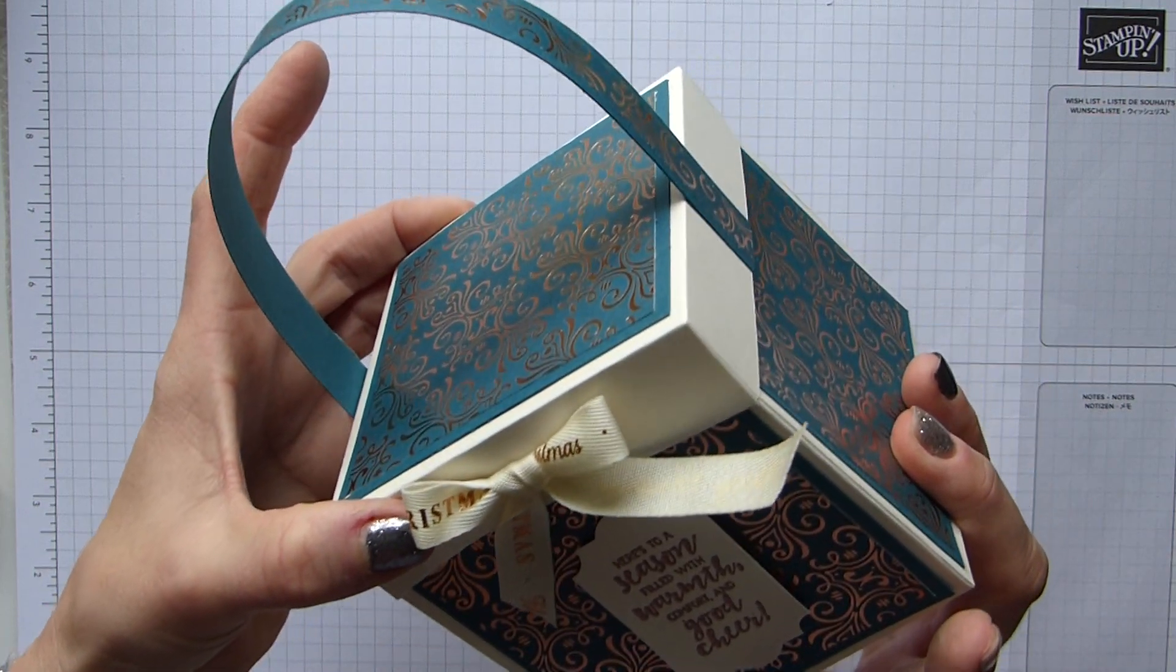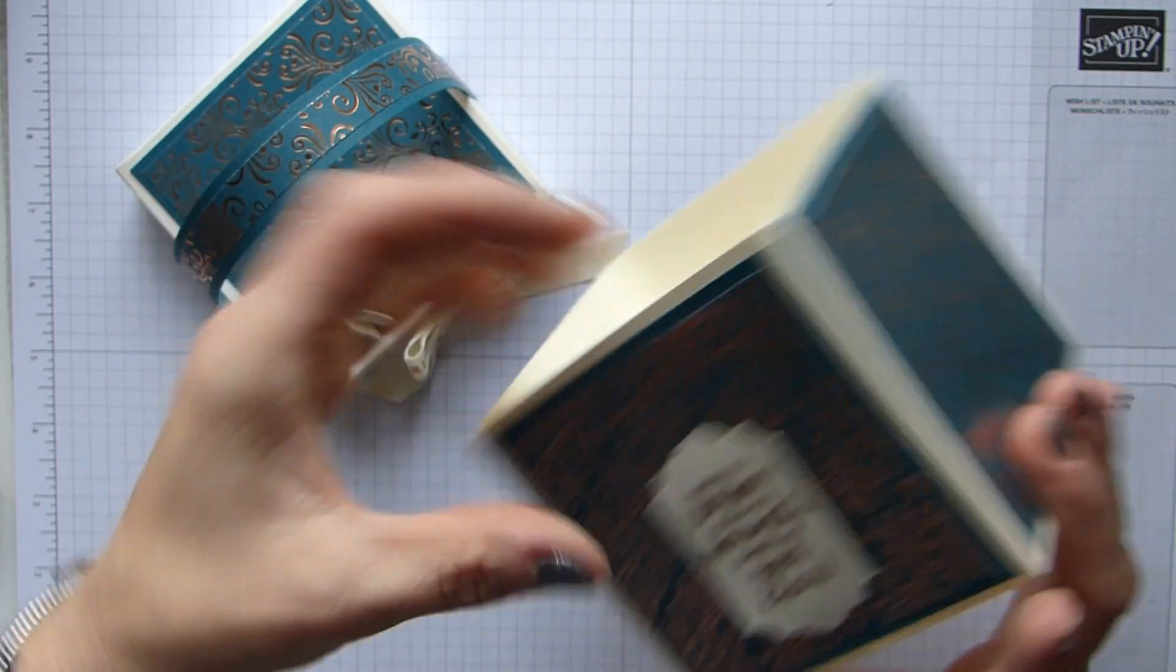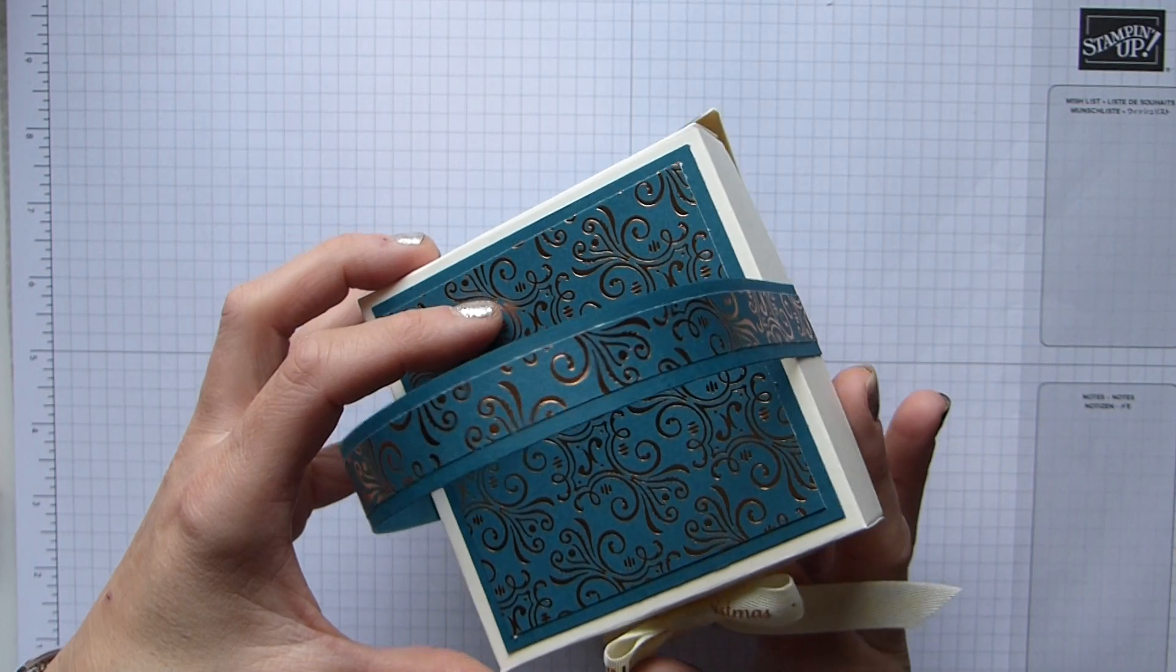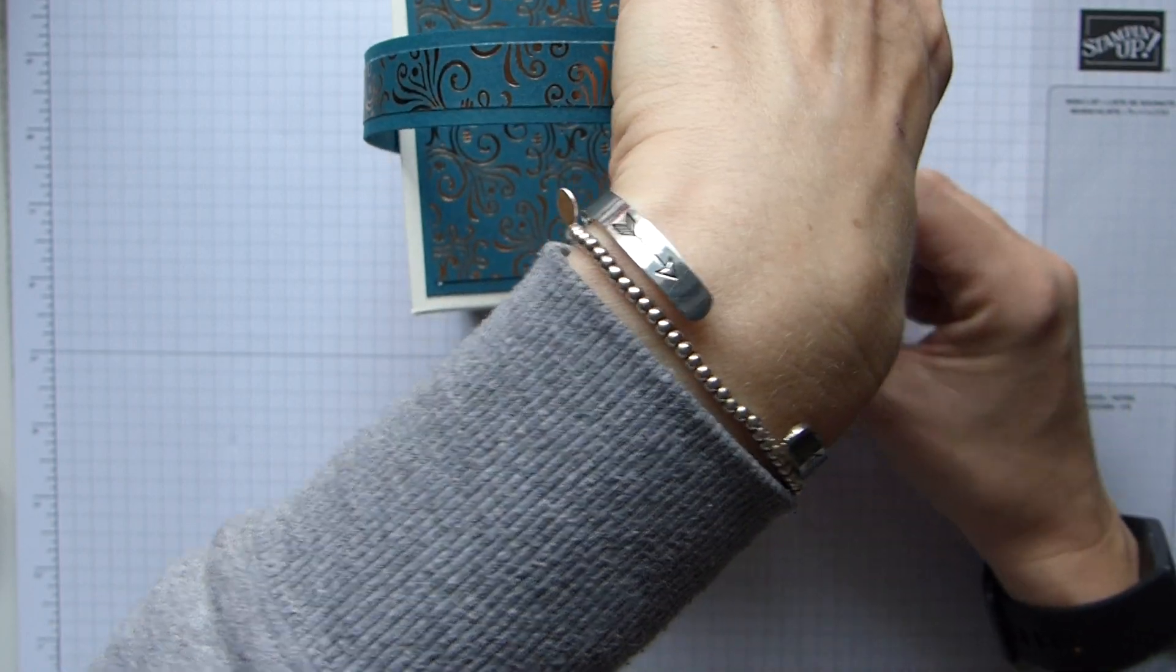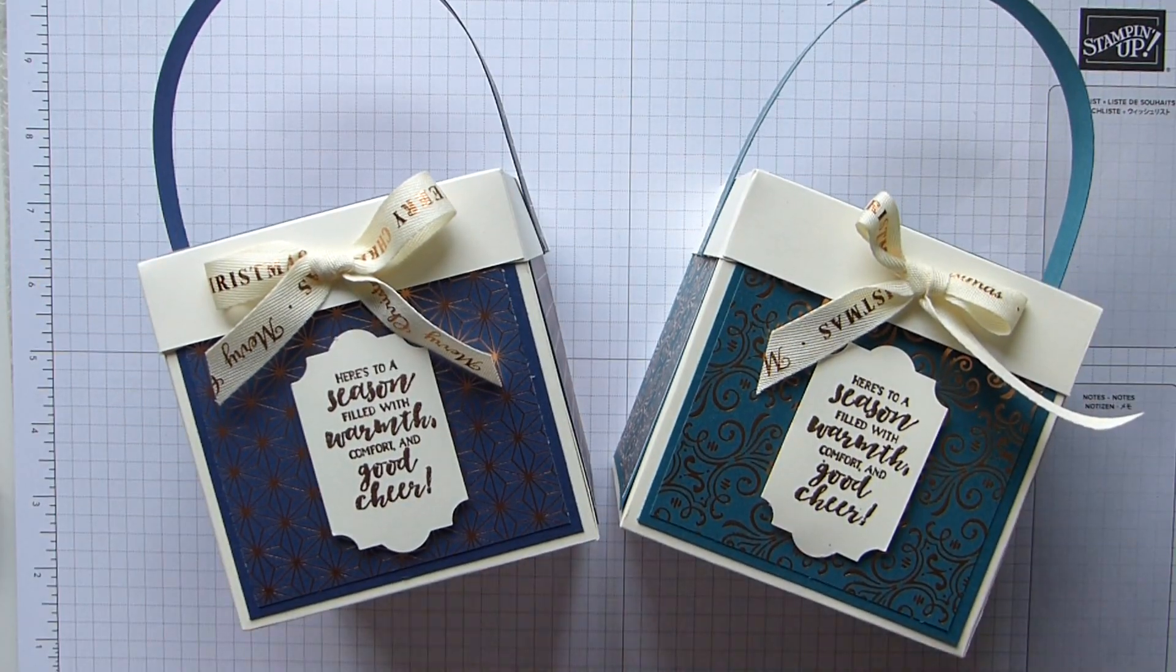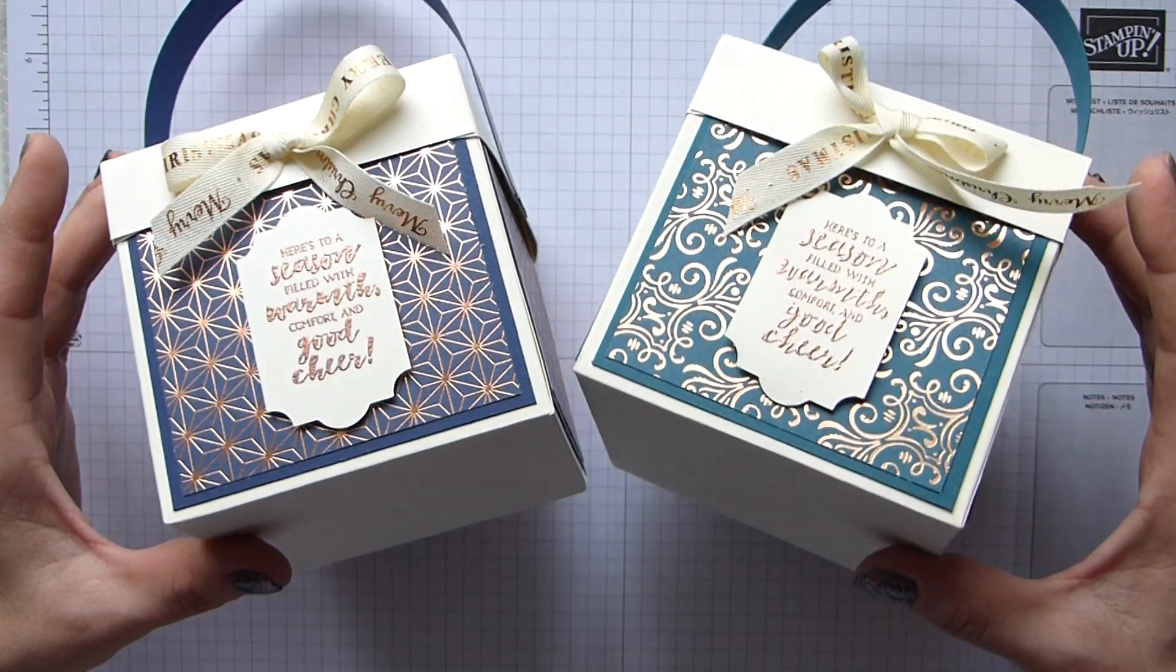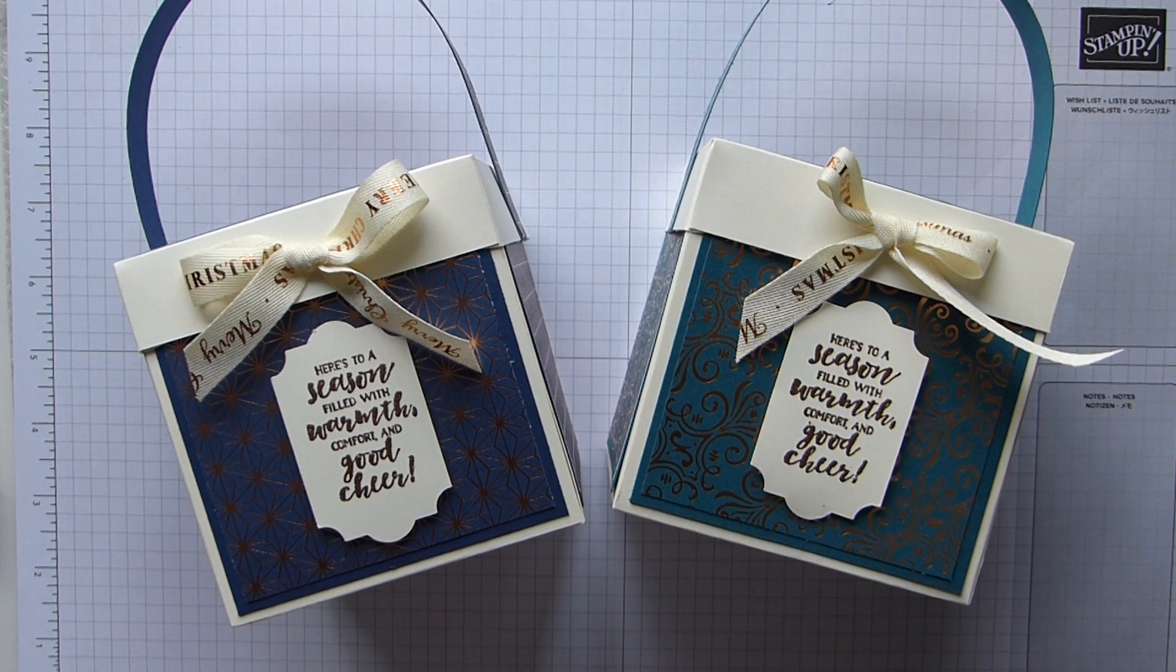And then I'm going to take the lid off just so I can press those dimensionals down. Just watch this ribbon when you pop your lid back on because it gets all tangled. There we go, and there is my gleaming Christmas boxes. Hope you like them. Which is your favorite? I can't tell either, they're both gorgeous. Thank you for joining me, and I'll see you all again soon. Bye!